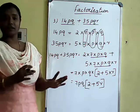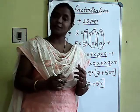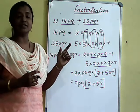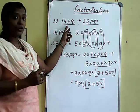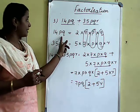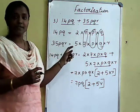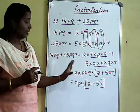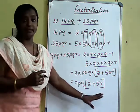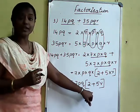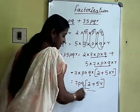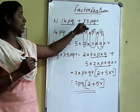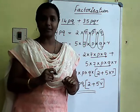This is the method of finding or expressing algebraic expressions as a product of irreducible factors or prime factors. First, express each term as a product of primes. Then mark the common factors, take them outside, and join the remaining terms in a bracket. So 7pq into (2 plus 5r) are the irreducible factors of 14pq plus 35pqr. Thank you.